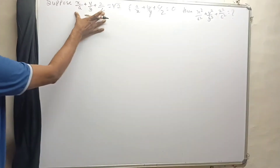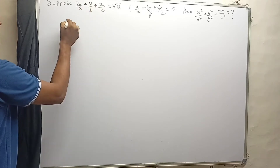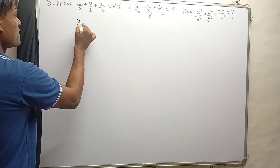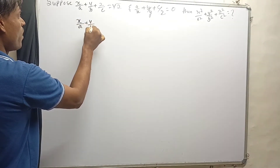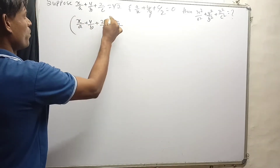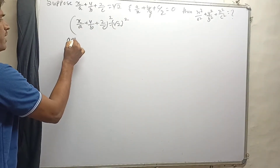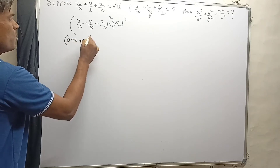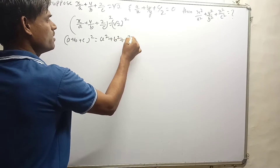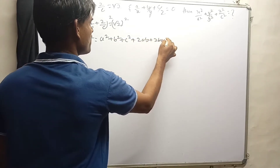To get that, we have to square this expression. So we are going to take this expression and square both sides. So x/a + y/b + z/c equals root 2; let's square both sides. This expression is in the form of (a+b+c)² which equals a² + b² + c² + 2ab + 2bc + 2ca.